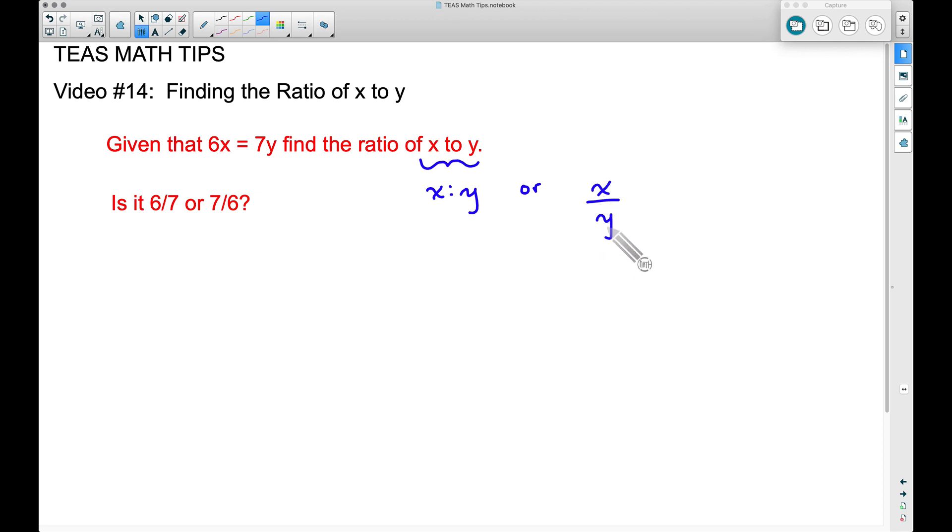I'm going to use this fraction, and we're going to try to get x over y in this equation. So let's write down 6x equals 7y. That is what's given to us.